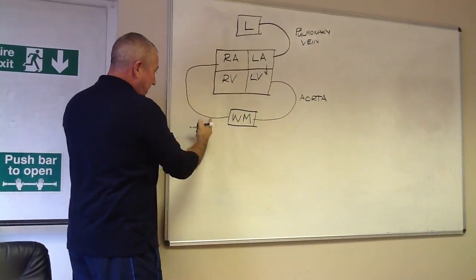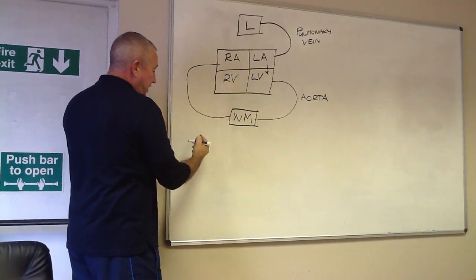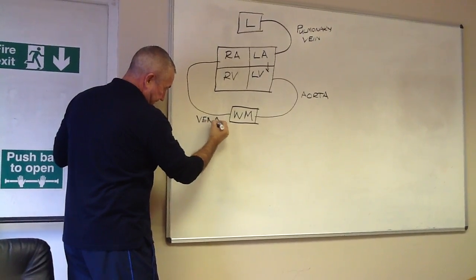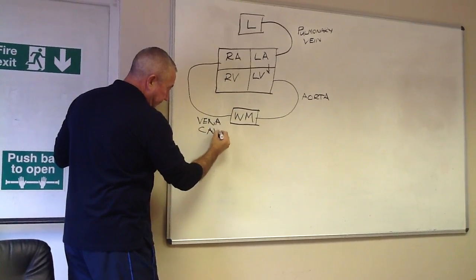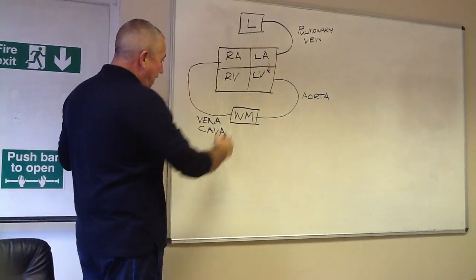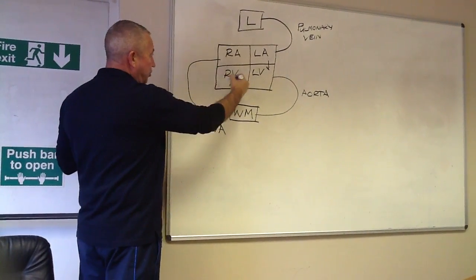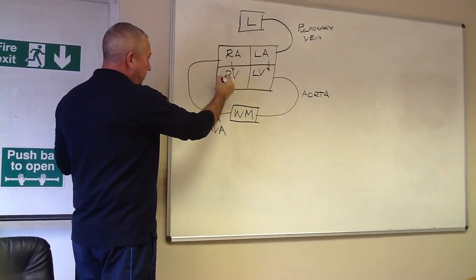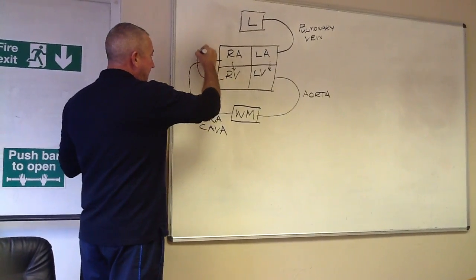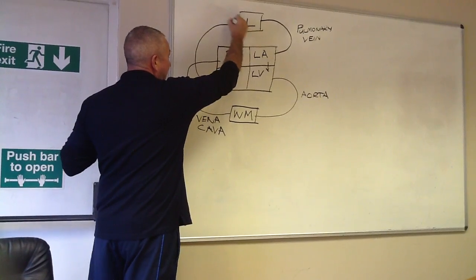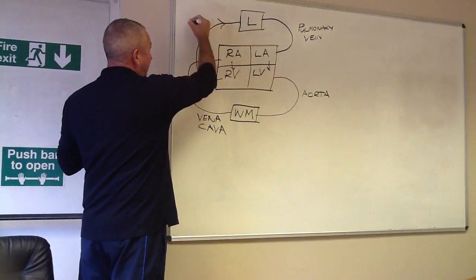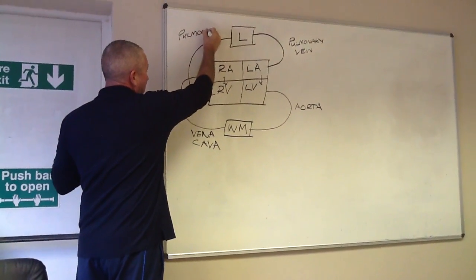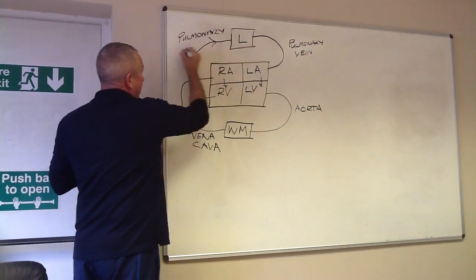It returns via this vein which is the largest vein in the body, and this is called the vena cava. So the vena cava carries the blood back into the right atrium. The blood flows into the right ventricle. The right ventricle pumps this now deoxygenated blood back into the lungs via the pulmonary artery.